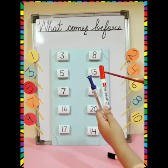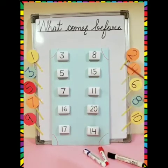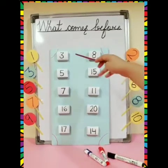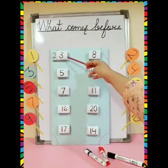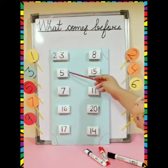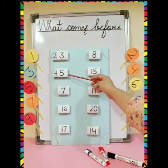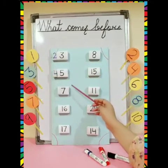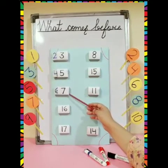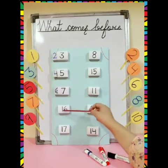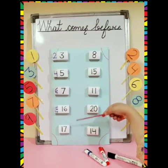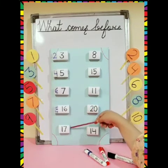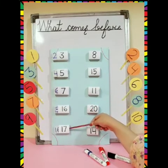Let's start. What comes before 3? Number 2. What comes before 5? 4. What comes before 7? 6. What comes before 16? 15. What comes before 17? Number 16.